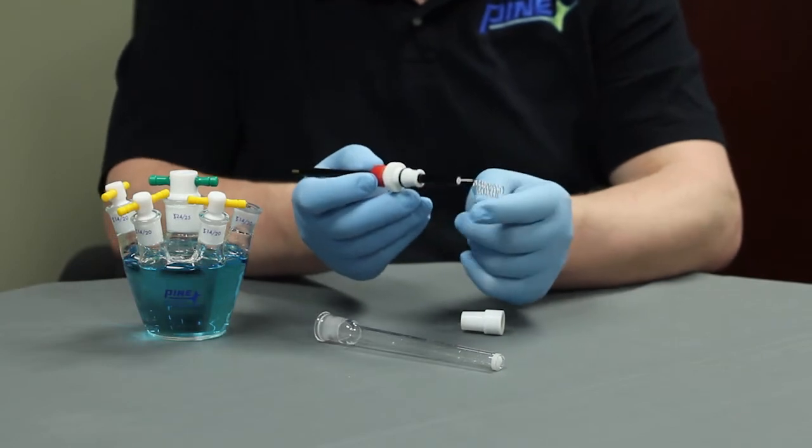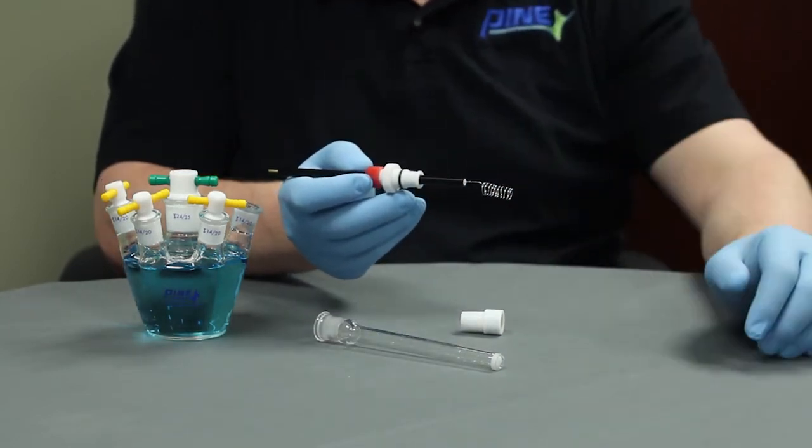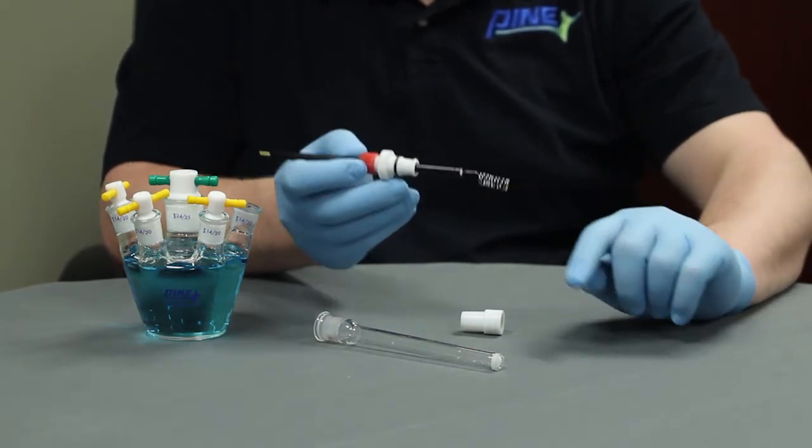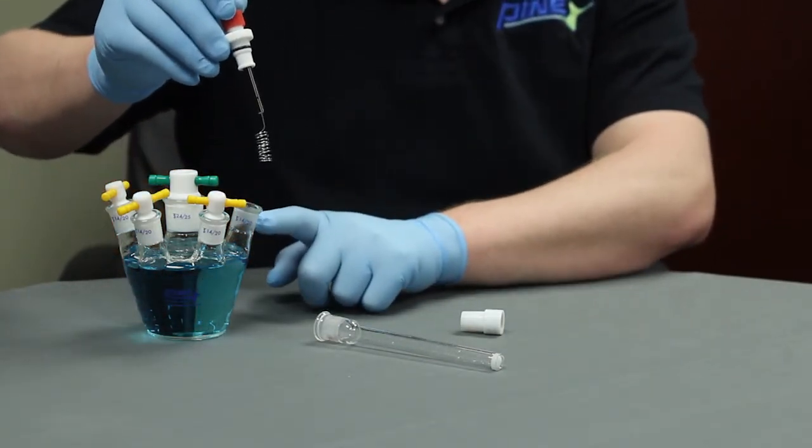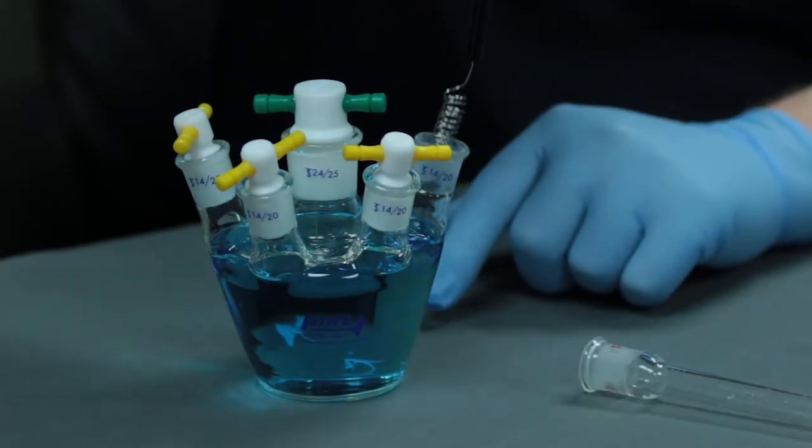And now you can use the platinum counter electrode with the coils in direct contact with solution. Simply place the platinum coils through the 1420 port of a cell, being careful not to damage the platinum coils.